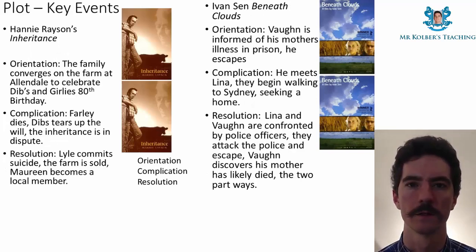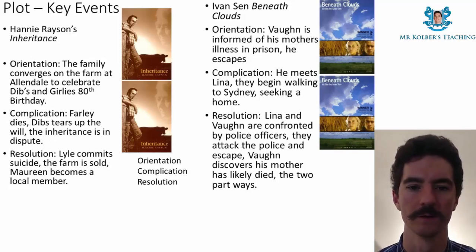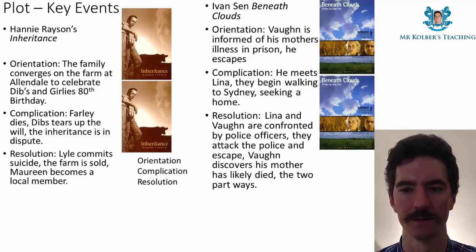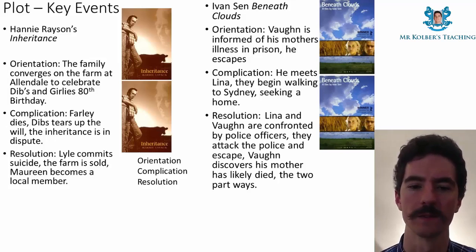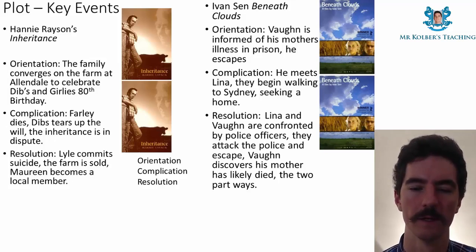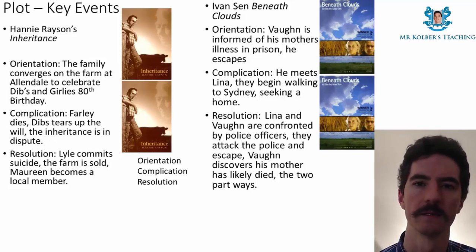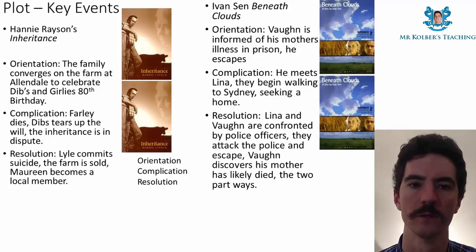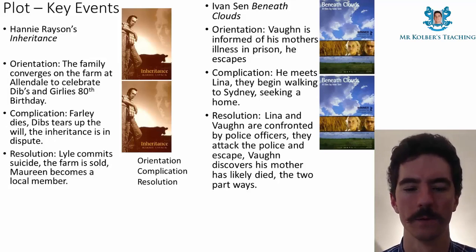Now we're going to talk about the key events of the plot. I could have used many different structures — a 3-point, 5-point, 12-point, the hero's journey — but I kept it pretty simple: orientation, complication, and resolution. In essence, beginning, middle, end. The beginning is the setup, the complication is the problem, and the resolution is how the problem is solved or what happens as a result.